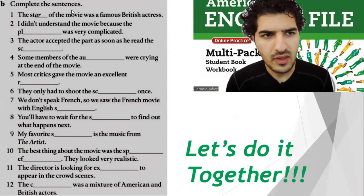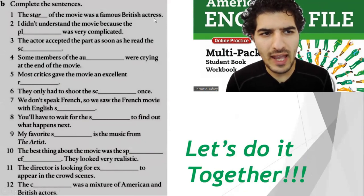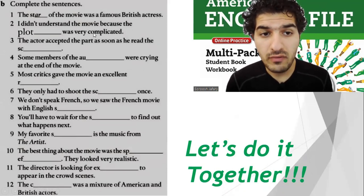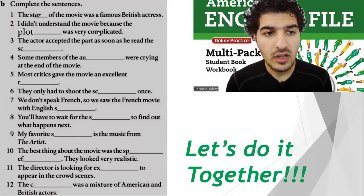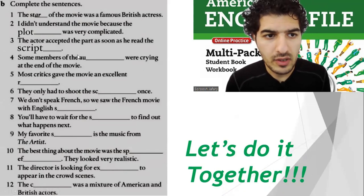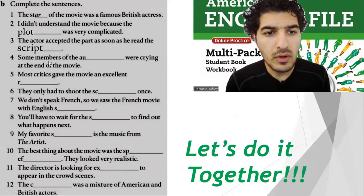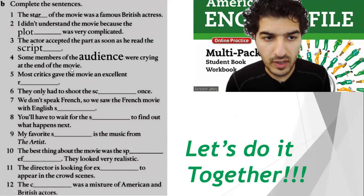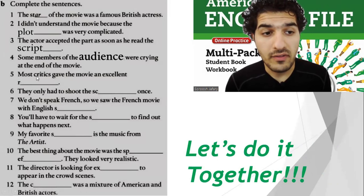All the way to Part B — let's do these ones together. Number one: the star of the movie was a famous British actress. Number two: I didn't understand the movie because the plot — the story — was very complicated. Number three: the actor accepted the part as soon as he read the script. Number four: some members of the audience were crying at the end of the movie.